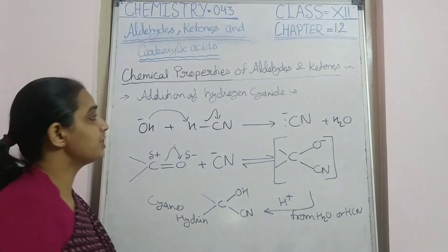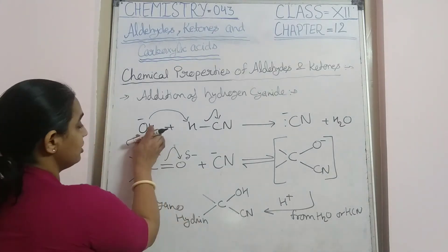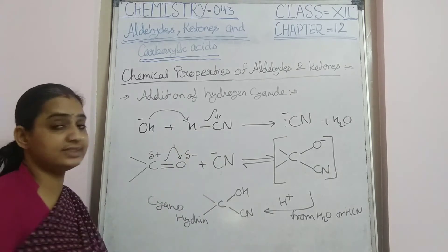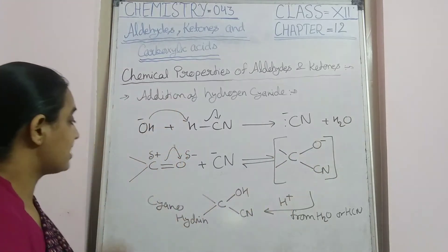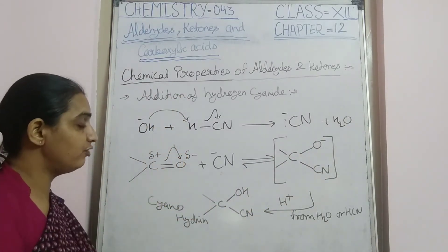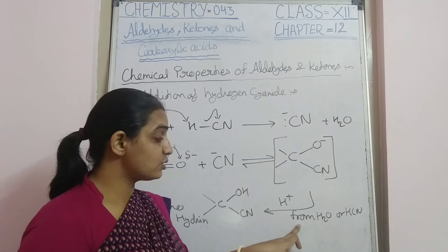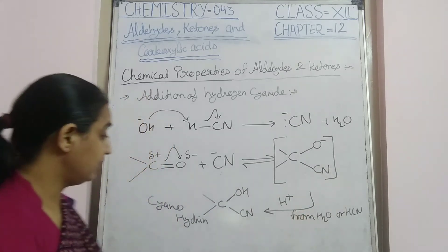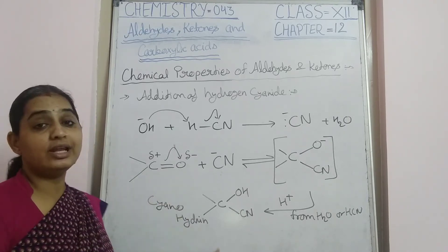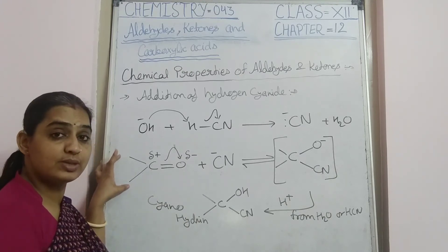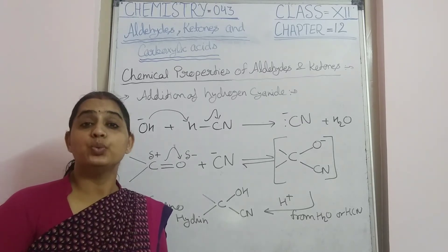The next reaction is the addition of hydrogen cyanide (HCN). The OH⁻ ion reacts with HCN to form the cyanide ion plus water. The cyanide ion then reacts with the carbonyl group to form a complex, which in the presence of water and H⁺ ions is converted into cyanohydrin. Both aldehydes and ketones can undergo this reaction, though pure HCN reacts very slowly.